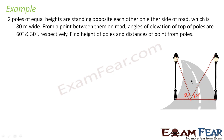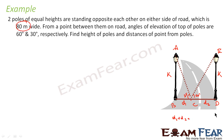We have two triangles ABC and CDE. Since the height of both poles is the same, I assume both heights equal k. I define d1 and d2 as the two base distances, where d1 plus d2 equals 80 meters — the width of the road. If we find d1 and d2 in terms of k, we can solve for k.